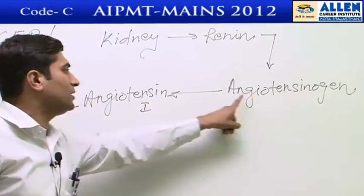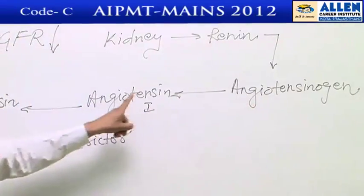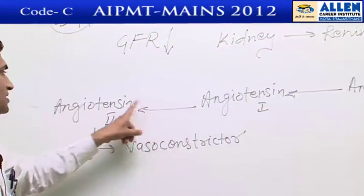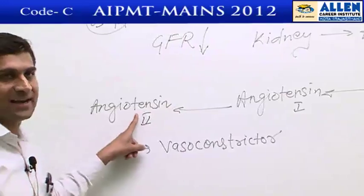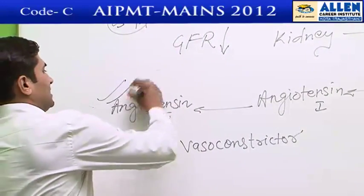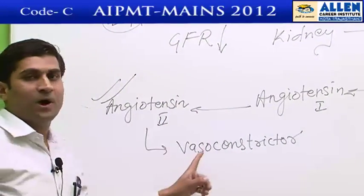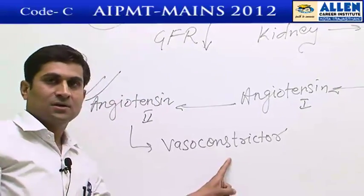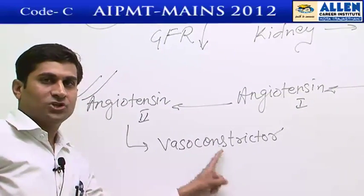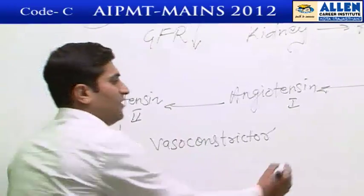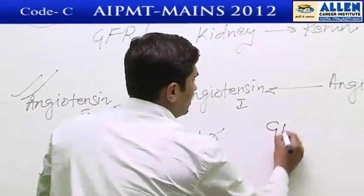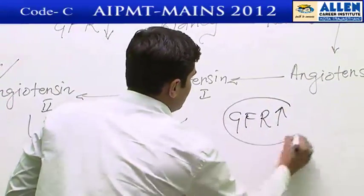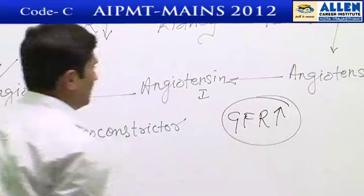Renin converts angiotensinogen into active angiotensin I, and thereafter angiotensin II. This angiotensin II is a powerful vasoconstrictor; due to this, blood pressure increases and GFR increases. So, due to angiotensin II, GFR increases.